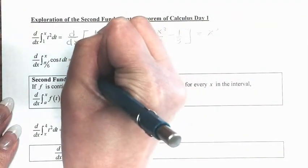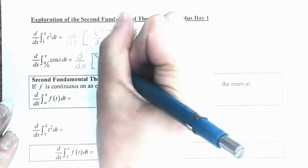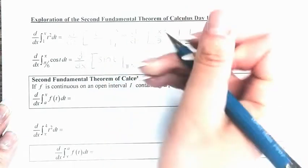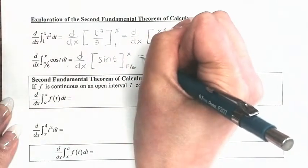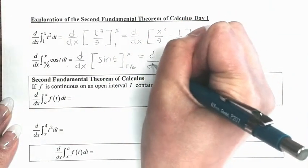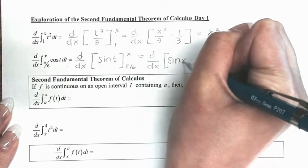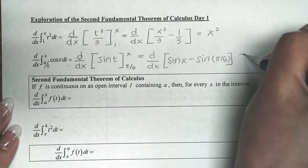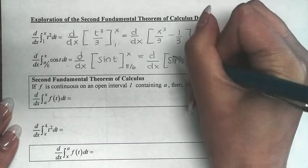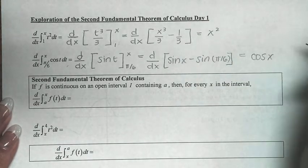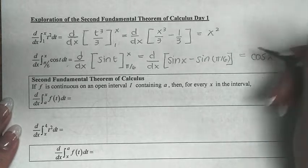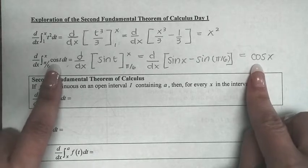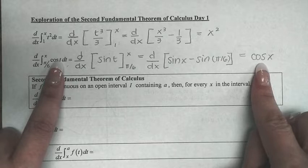So we have d/dx, and you know that the integral of cosine is sine of t, evaluated from π/6 to x. We plug in x and π/6, giving the derivative with respect to x of sine of x minus sine of π/6. Taking the derivative of each term: the derivative of sine of x is cosine of x, and the derivative of sine of π/6 is zero, since that's a constant.